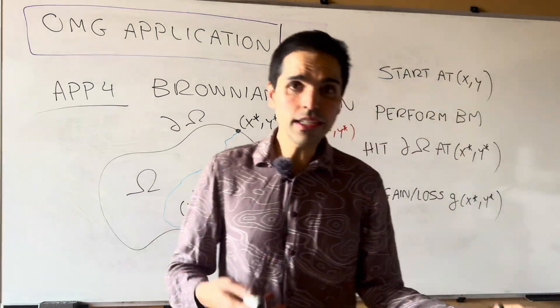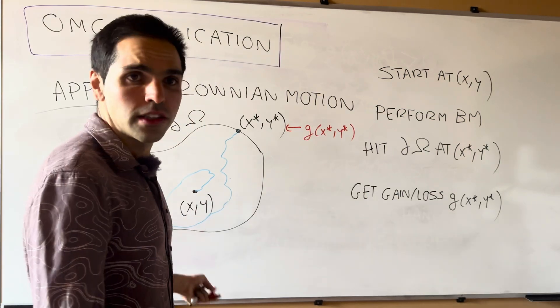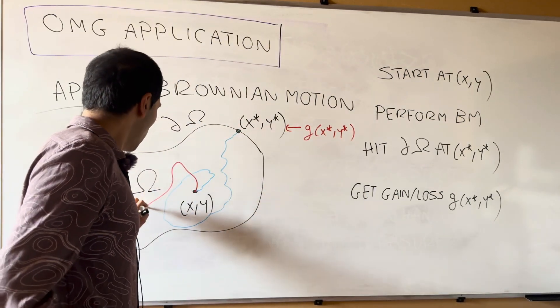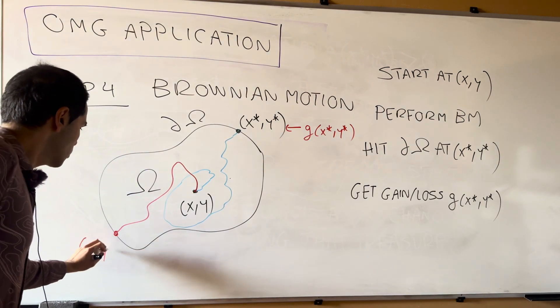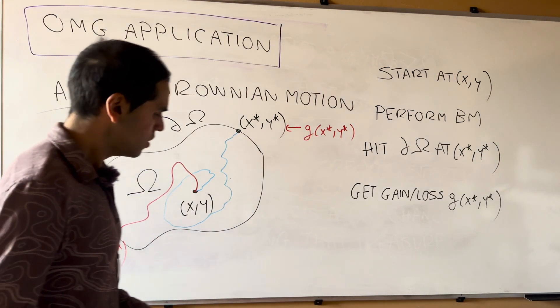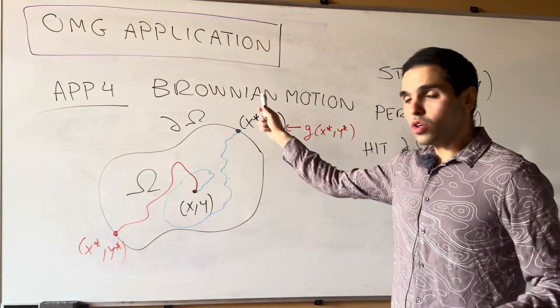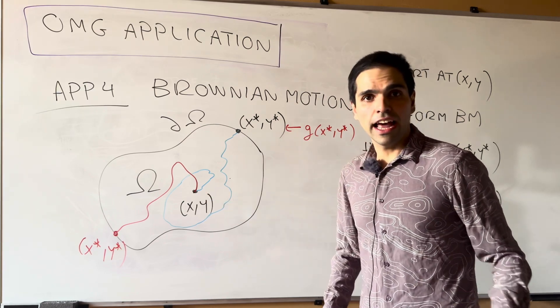Now notice, this is a very random event. Because starting at the same point, another person might hit the wall at some other point. So in other words, it makes sense to consider the average gain starting at x comma y.